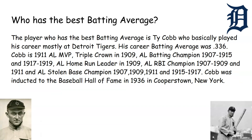Cobb is a 1911 AL MVP and won the Triple Crown in 1909. He was American League batting champion in 1907, and American League home run leader in 1909. He was also American League RBI champion in 1907, 1909, and 1911.